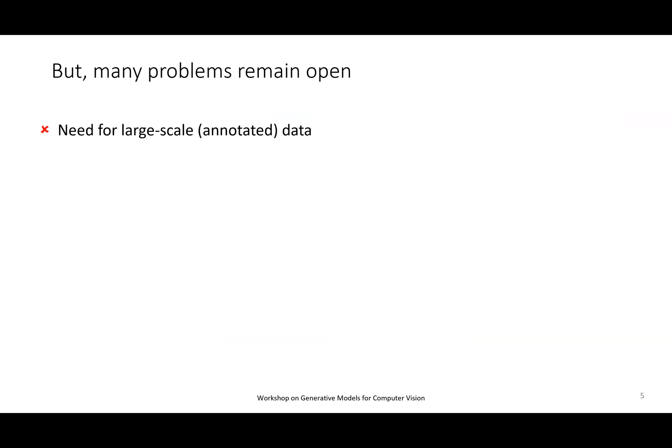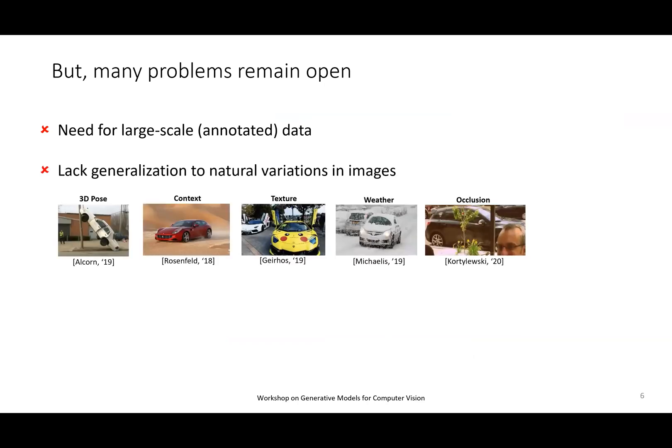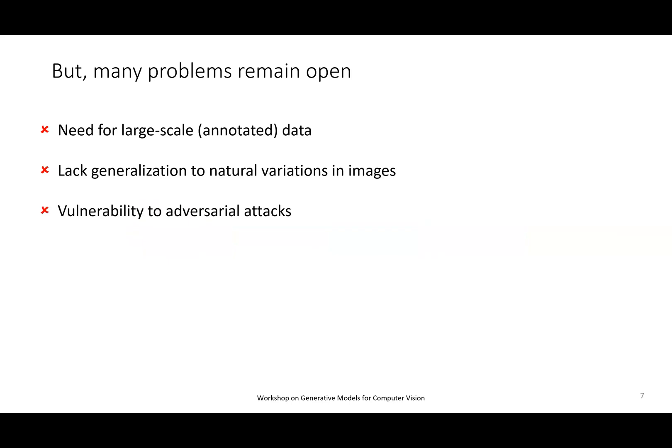But of course there are also many open problems. One is that we actually need to train from a lot of data — mostly annotated data — which is a big issue. Even models trained from a lot of data do not generalize well when there are natural variations at test time. You're trained on some dataset, but at test time the context, shape, or appearance changes and suddenly your algorithm breaks. That's a big issue.